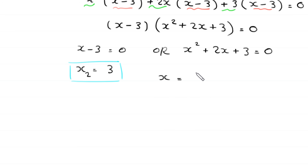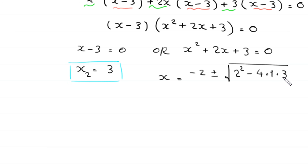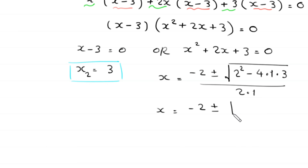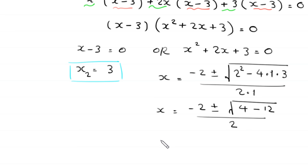Using the quadratic formula, x = (-2 ± √(2² - 4·1·3)) / (2·1) = (-2 ± √(4 - 12)) / 2 = (-2 ± √(-8)) / 2.